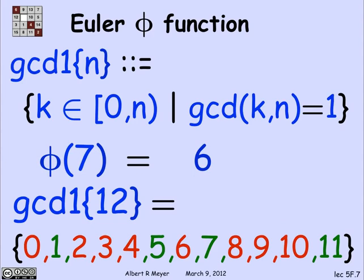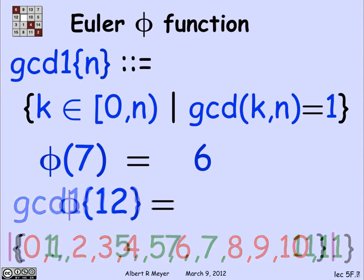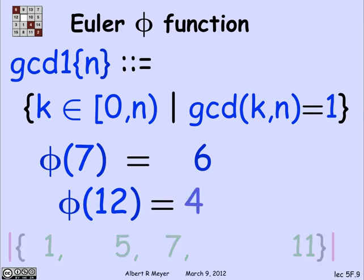GCD1 of 12 determines phi of 12. Phi of 12 is the number of green elements, which is 4.